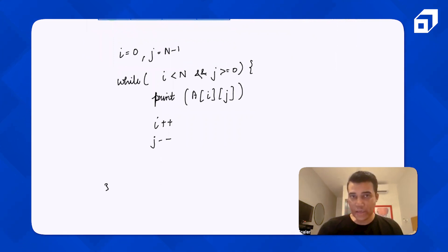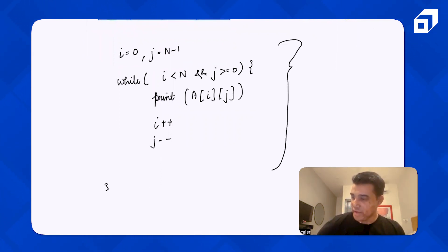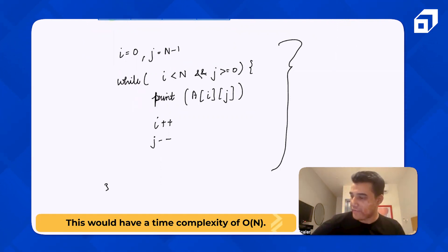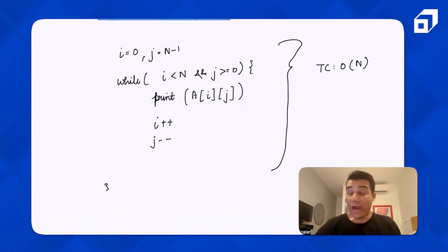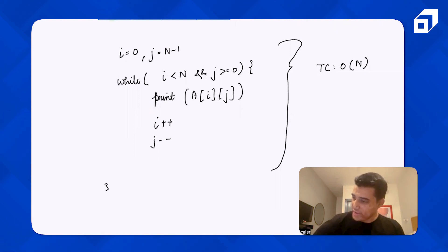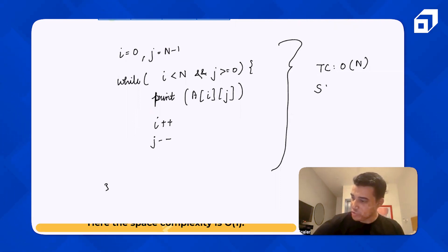The non-main diagonal traversal also prints one element per row, so the time complexity is O(n). Since we are not using any extra array, the space complexity is O(1).